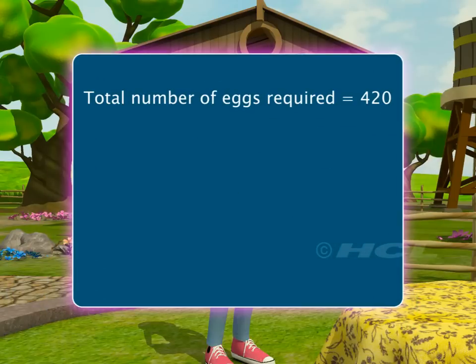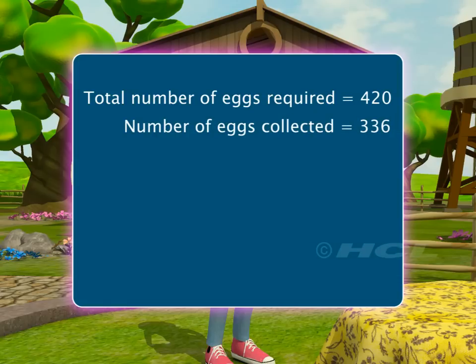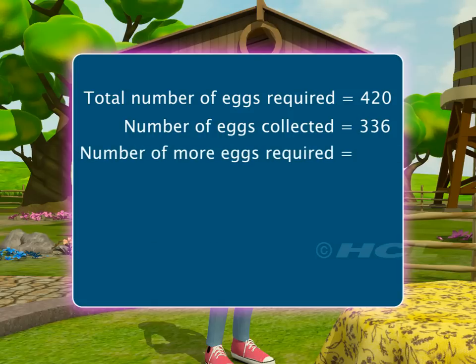The total number of eggs is equal to 420. Number of eggs collected is equal to 336. So, the number of more eggs required is equal to 420 minus 336.